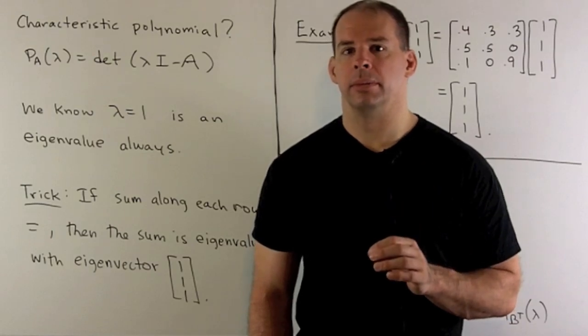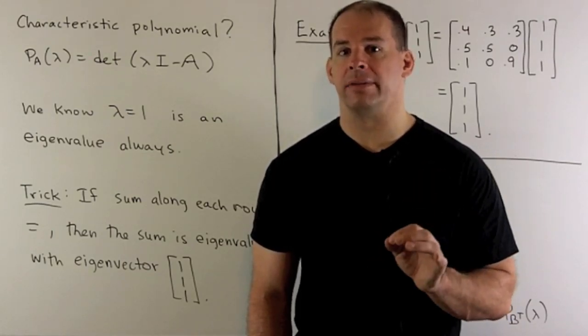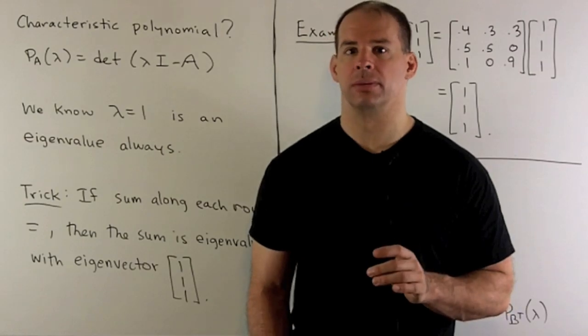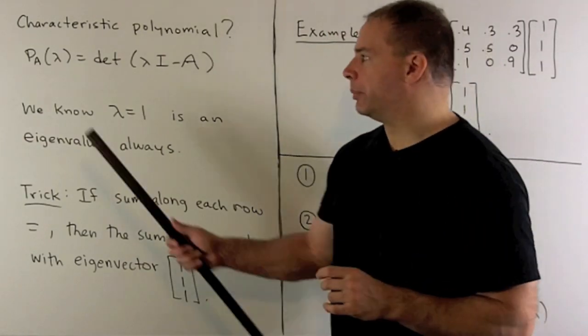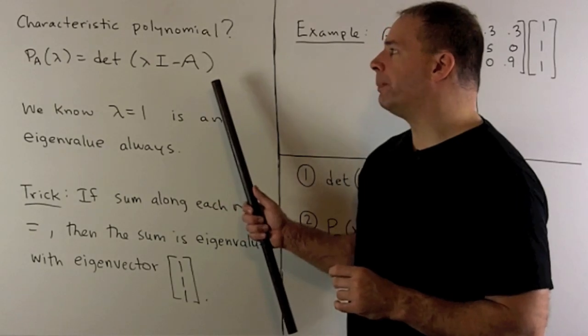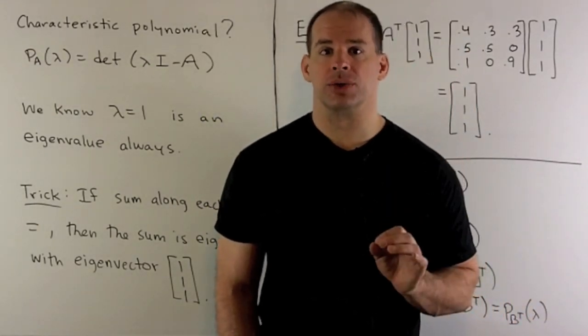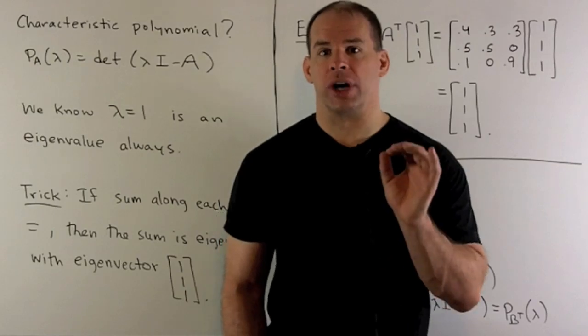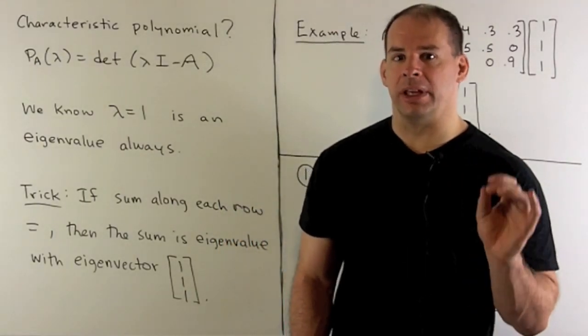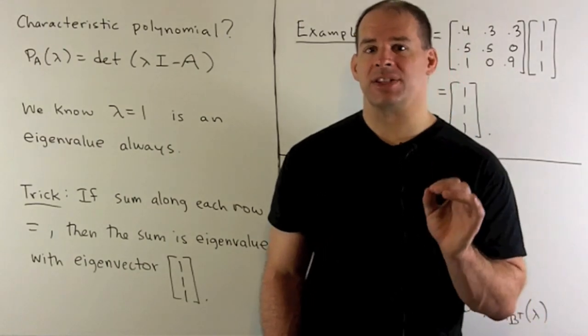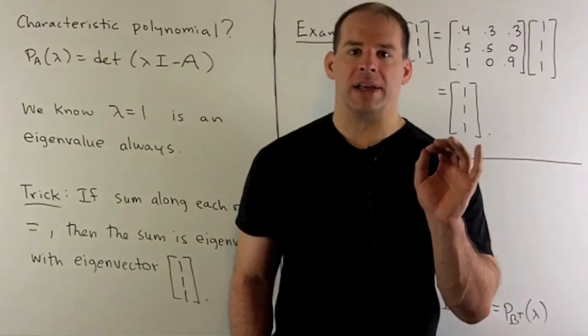For our problem, we skip a main step in our usual procedure for finding eigenvalues and eigenvectors. Normally, we compute our characteristic polynomial, we find the zeros, and that gives us the eigenvalues. If I have a transition matrix, we automatically know that we have an eigenvalue equal to 1, and that gives us a stable solution. Why is this true?